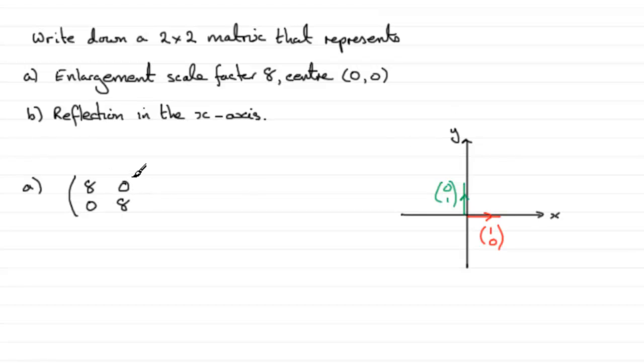And in part B, reflection in the x-axis, again starting with this base vector, what happens to (1,0) if you reflect it in the x-axis? Well, it stays put, so we write that in as (1,0).